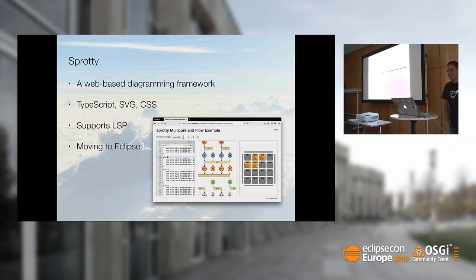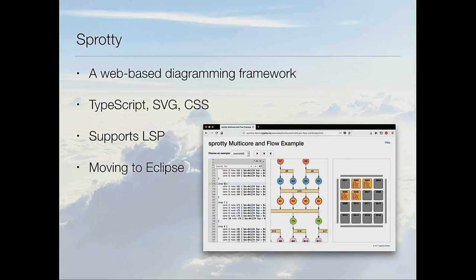For the graphical part, we're also going to use an Eclipse project, and it's Sprotty — a web-based diagramming framework. The whole front-end part that does the actual visualization is implemented with native technologies for the web, like TypeScript, SVG, and CSS. It's meant to support client-server scenarios like we have with the language server protocol from the beginning. The separation of where you get your model from and where you visualize it is built into the framework. And it's currently moving to the Eclipse Foundation.